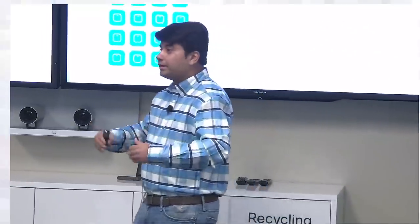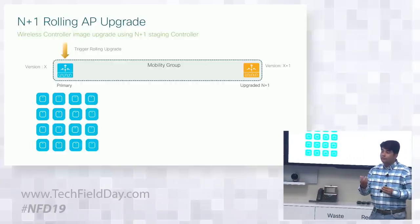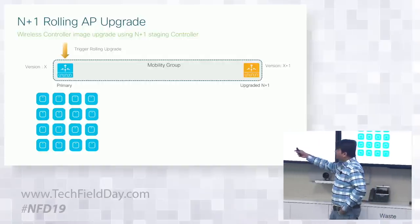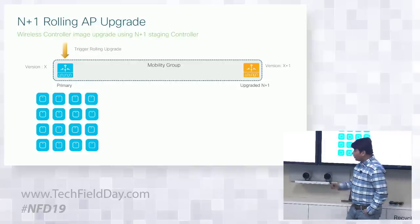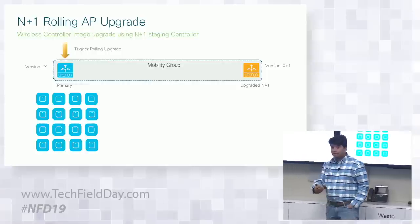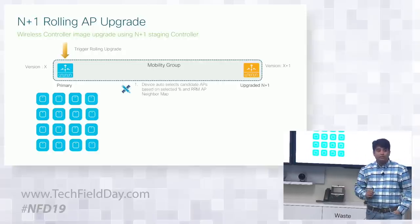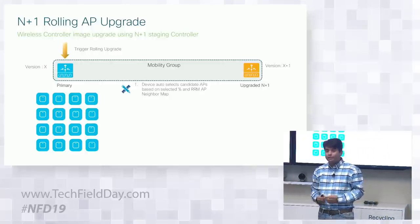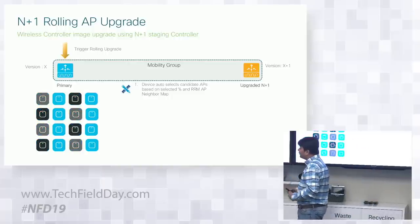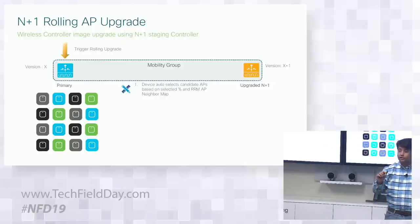For a planned full controller image or access point upgrade, the intelligent RF-based rolling AP upgrade requires no manual intervention. For example, you have two controllers — one running version X and an N+1 controller upgraded to version X+1. All access points are joined to the primary version X controller. You define a percentage of APs to upgrade at a time — default is 15%, but you can set 5% or 25%. Based on RF, the system intelligently selects which APs in the network should be upgraded first, finding safe neighbor APs alongside them.